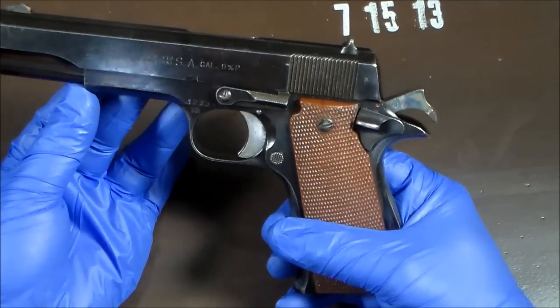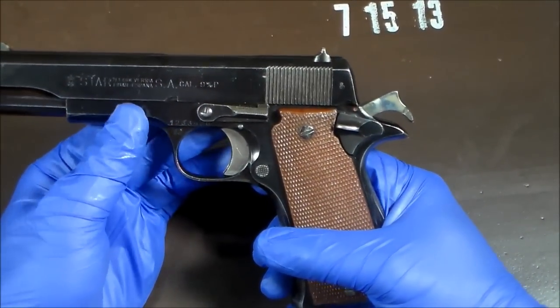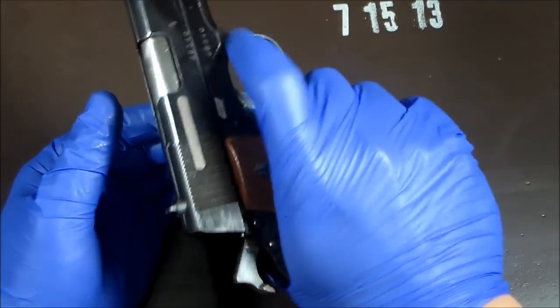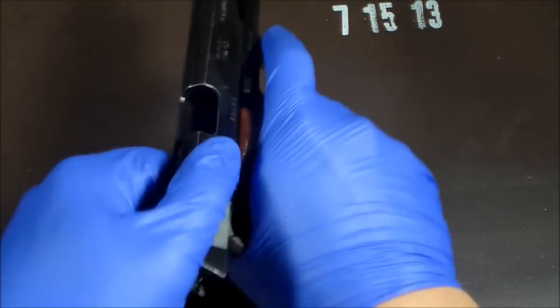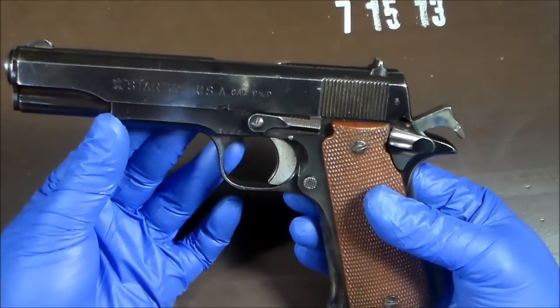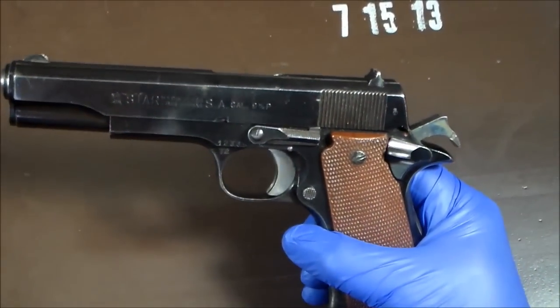So this is a good 1911 trainer on a budget because you will be shooting cheap 9mm ammos compared to the big and expensive 45 ACP. Okay, so there you go, my unboxing and initial impression of the Star Model B. Thanks for watching.